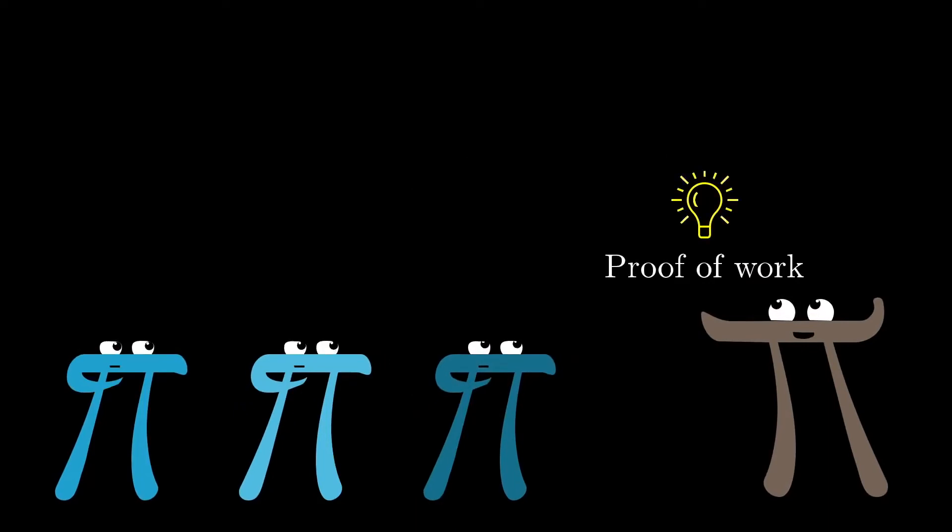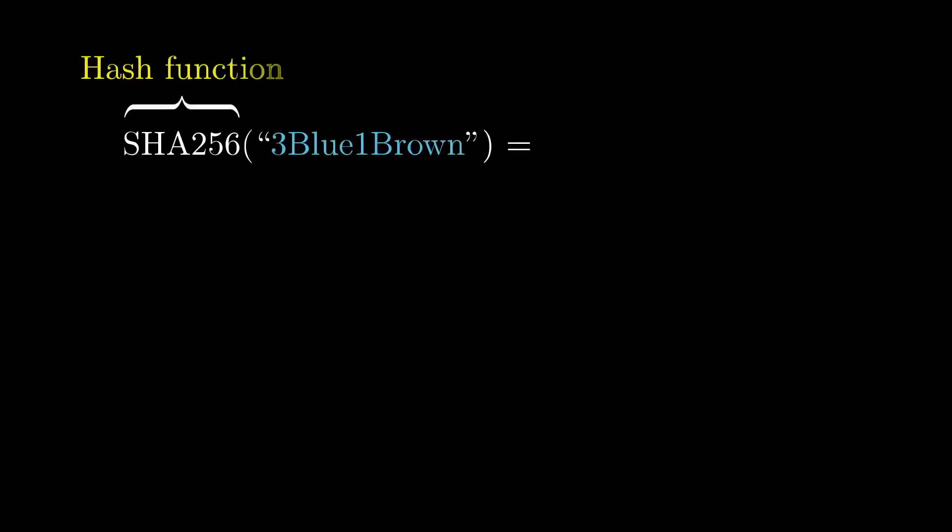So first things first: what's a hash function? The inputs for one of these functions can be any kind of message or file—it really doesn't matter—and the output is a string of bits with some kind of fixed length, like 256 bits.